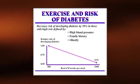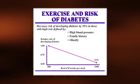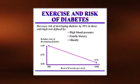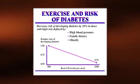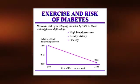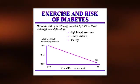Regular exercise is particularly beneficial for individuals who are at a high risk of developing type 2 diabetes as a result of having multiple risk factors such as hypertension, a family history of diabetes, and obesity. Such individuals can decrease their risk of developing type 2 diabetes by as much as 50% with regular exercise.